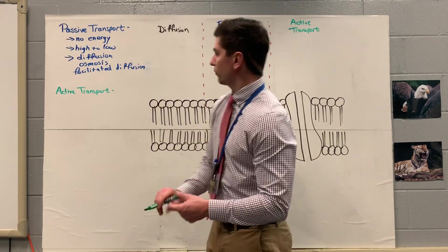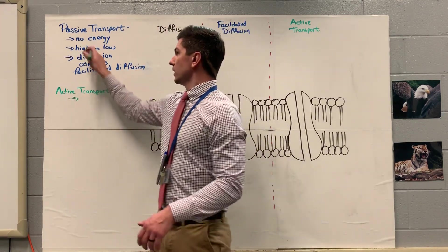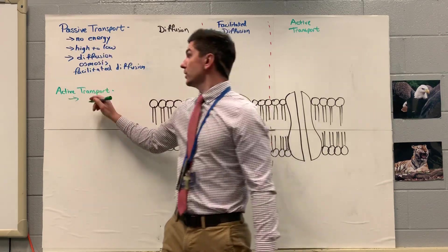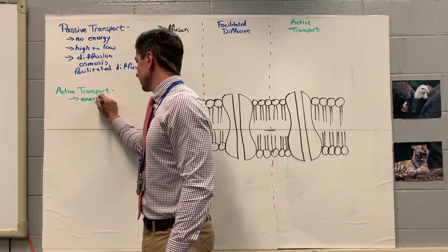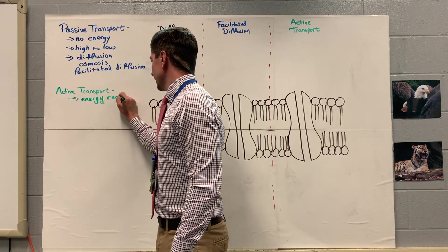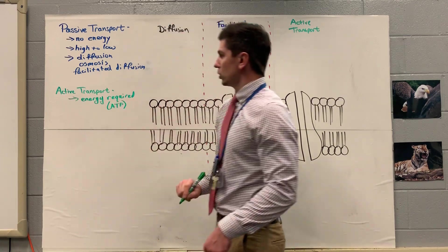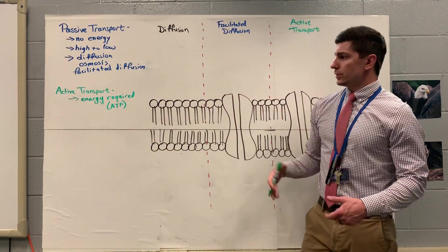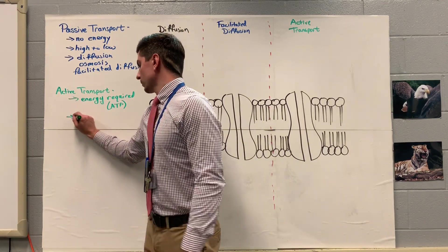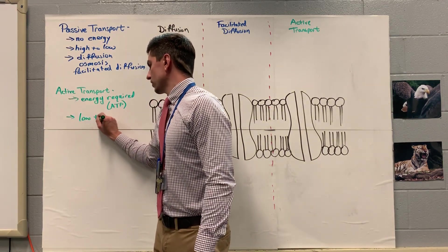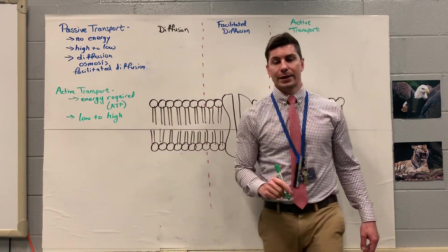For active transport, just to go over our characteristics, it's essentially the opposite of passive. So passive, we did not require energy. For active, we need energy. So energy is required. And that energy is going to be in the form of ATP. So since we are doing the opposite of passive transport, it's going to go from low to high concentration. And this is why energy is needed. We're going against our concentration gradient.